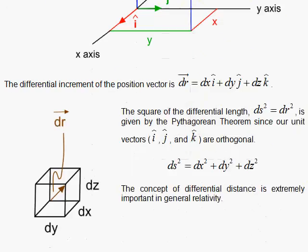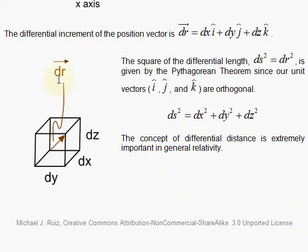Now let's look at what happens when we look at a differential dr vector. Then we have a little box where each of the sides dx, dy, and dz are infinitesimals, and we do the same thing—you have the i-hat, j-hat, and k-hat and you get your little differential dr vector.